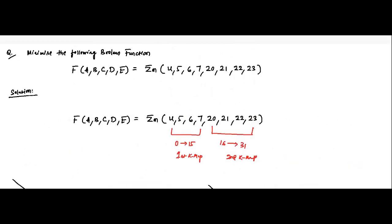For the first set of values: min-term 4, remembering the bit positions 16, 8, 4, 2, 1, gives A-bar, B-bar, C, D-bar, E-bar. Min-term 5 is A-bar, B-bar, C, D-bar, E.